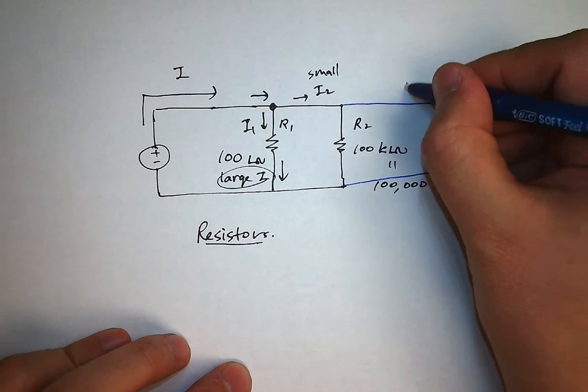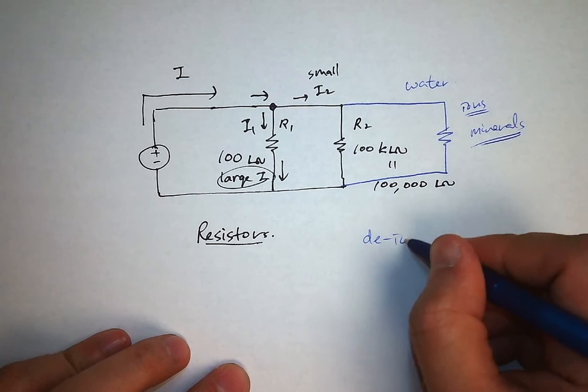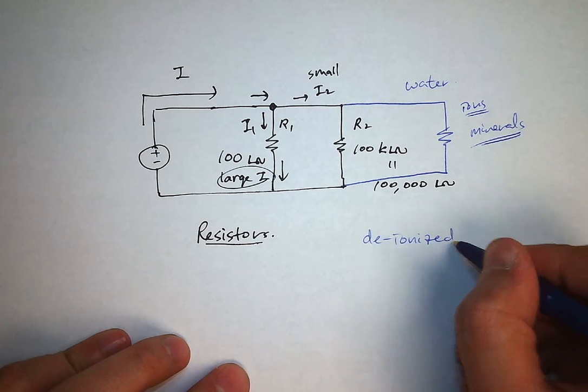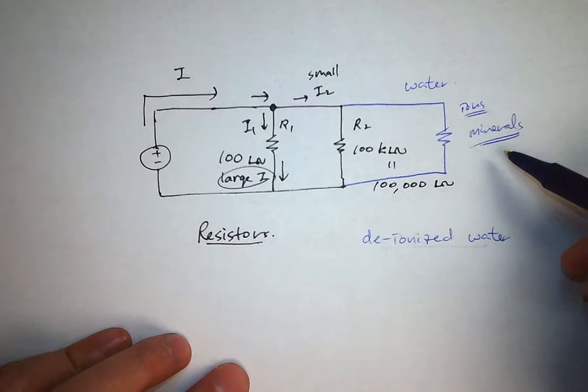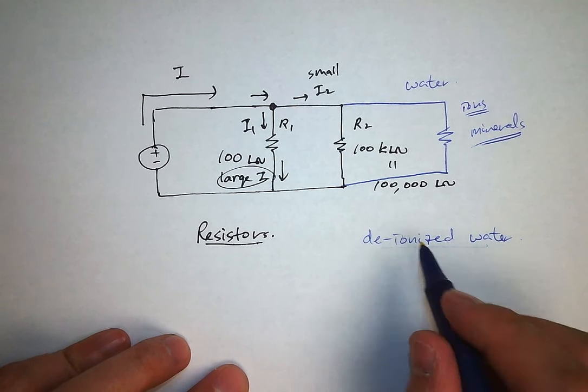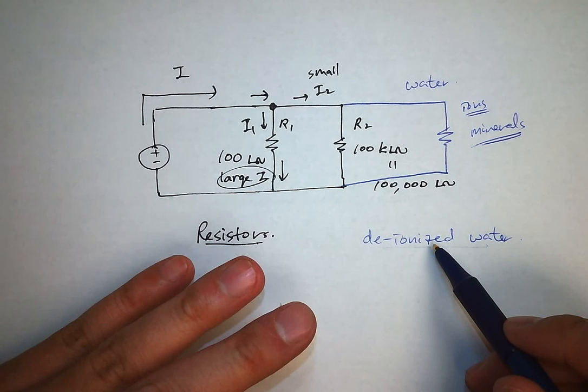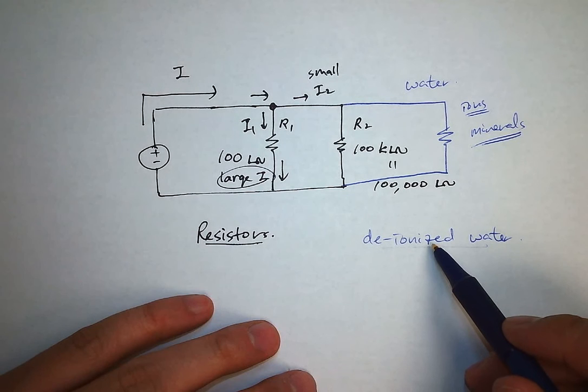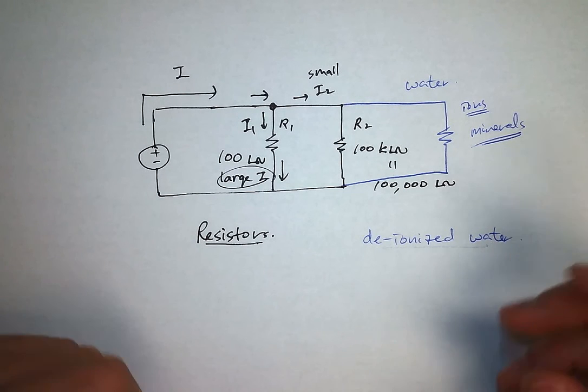deionized water - so this is regular water and then we have deionized water. Deionized water doesn't have these ions, it doesn't have these minerals. So if you drop your phone in deionized water, it'll still work. You can just dry the phone - just leave it out to dry, it'll be fine.